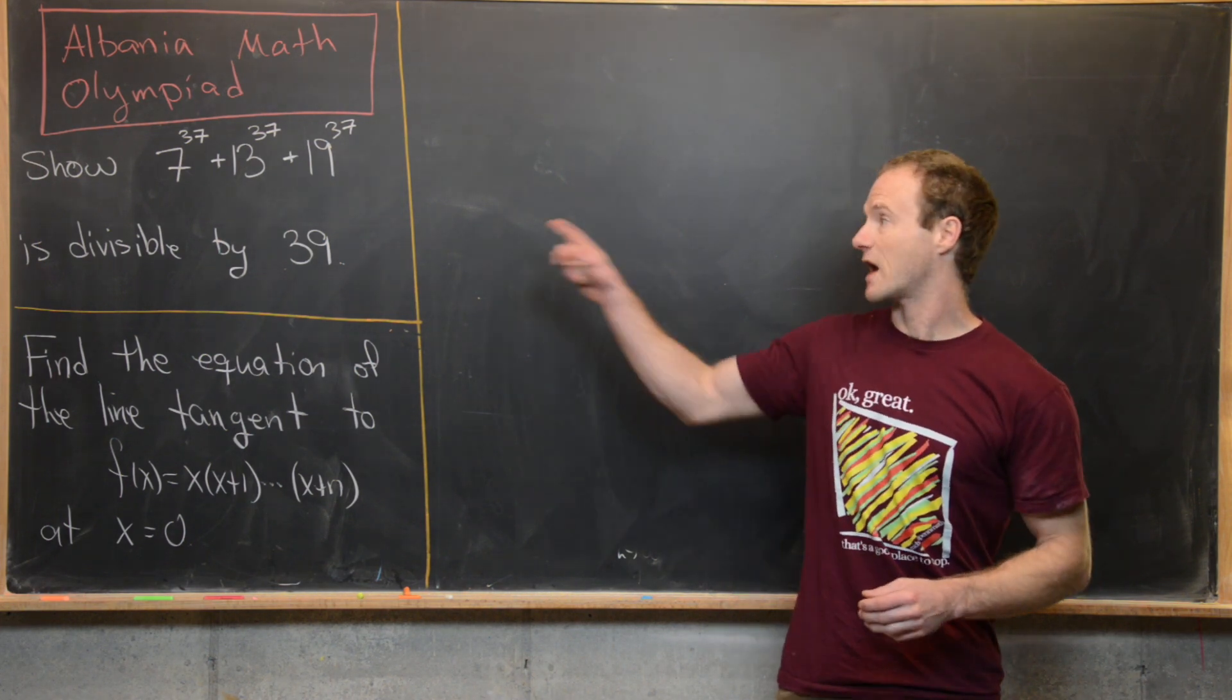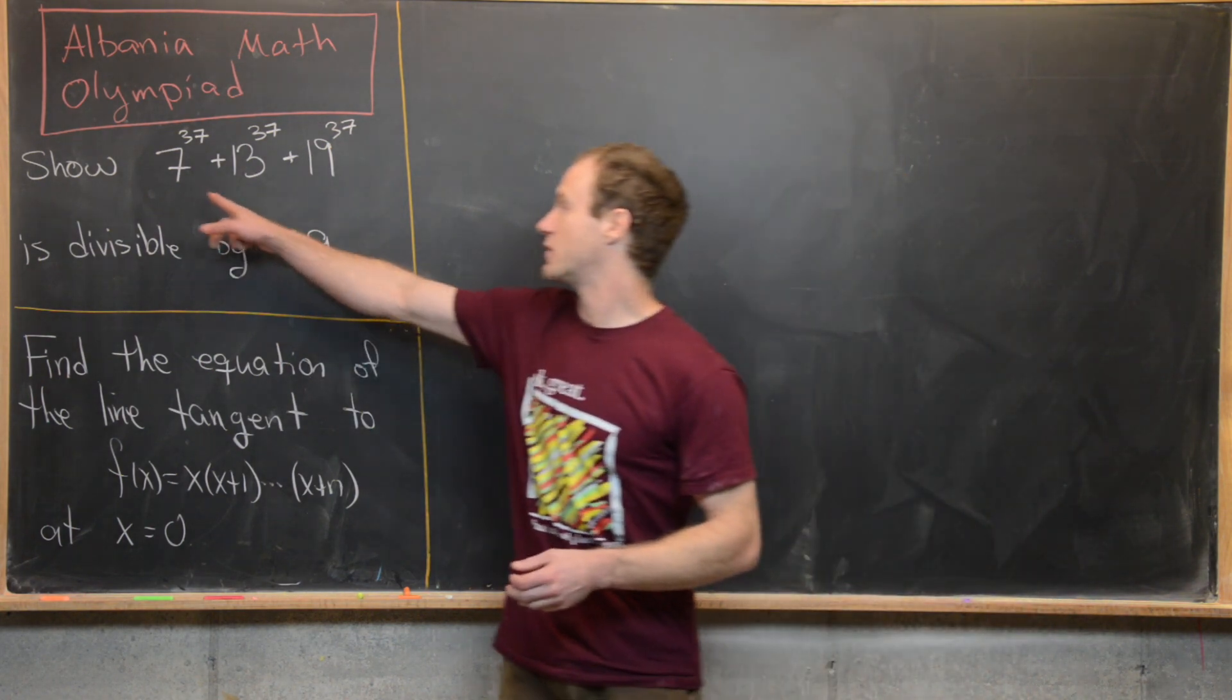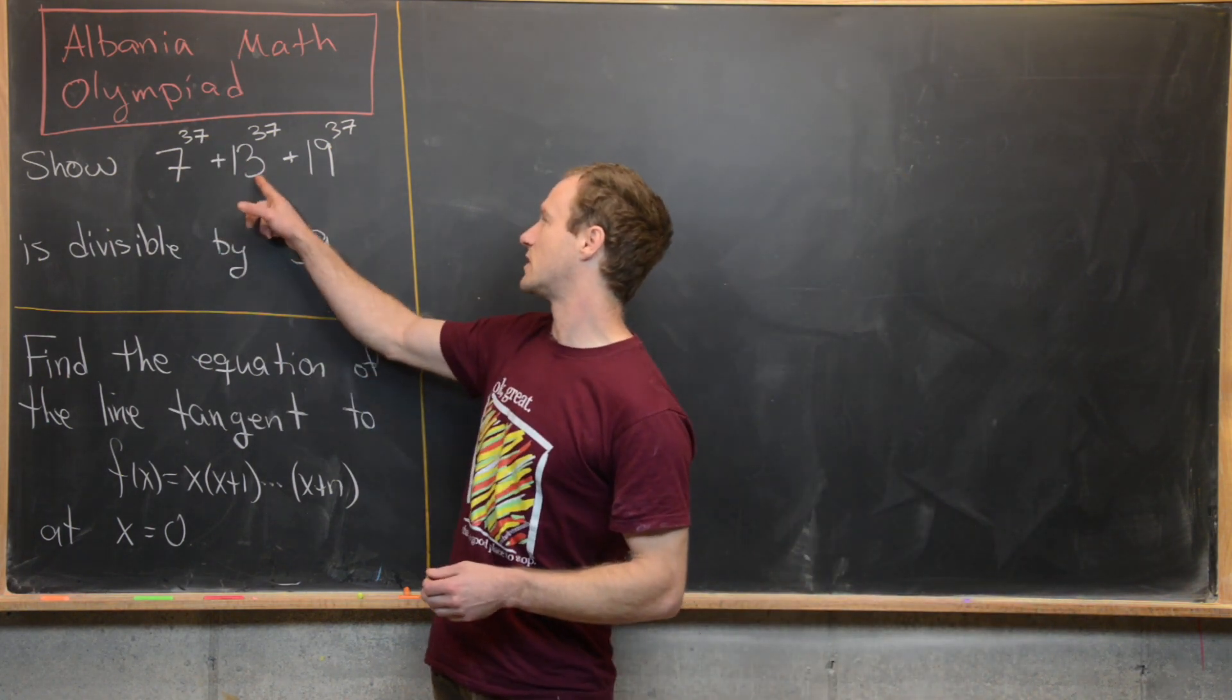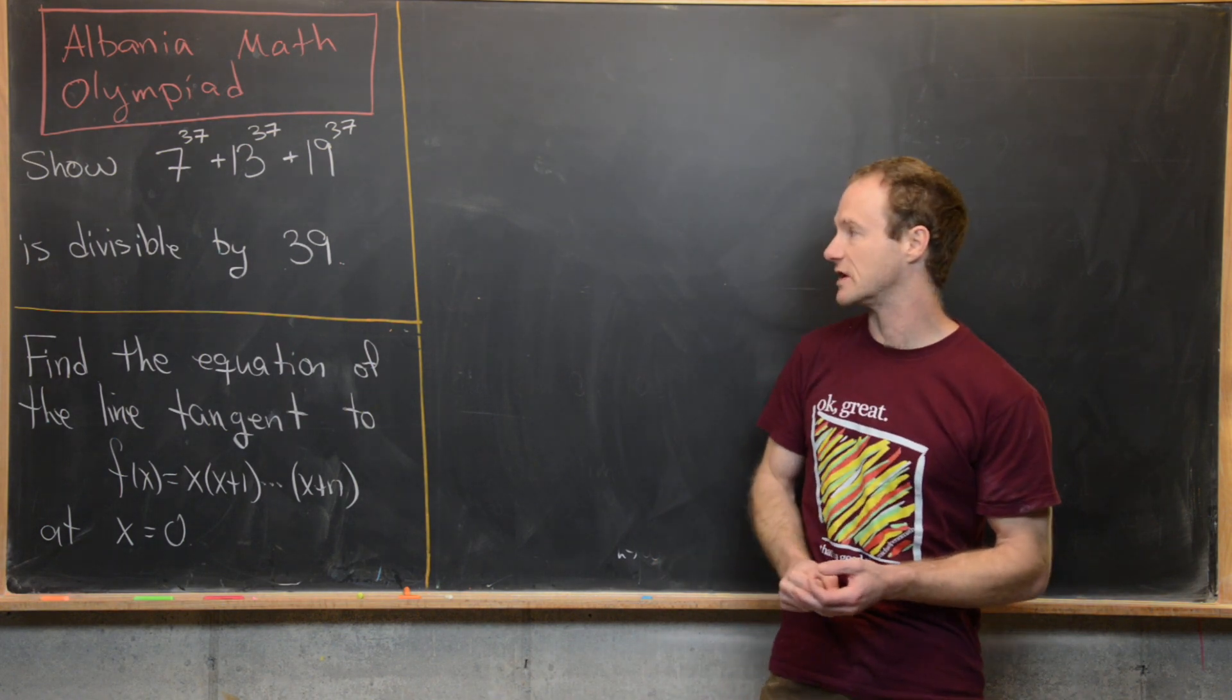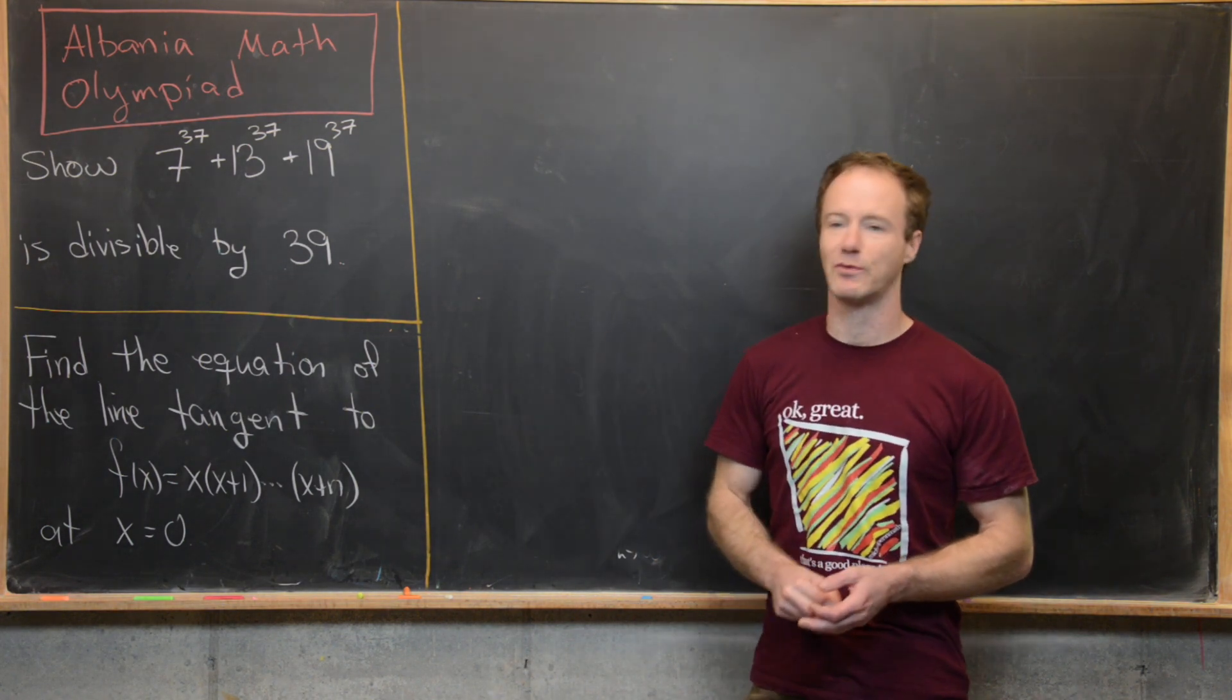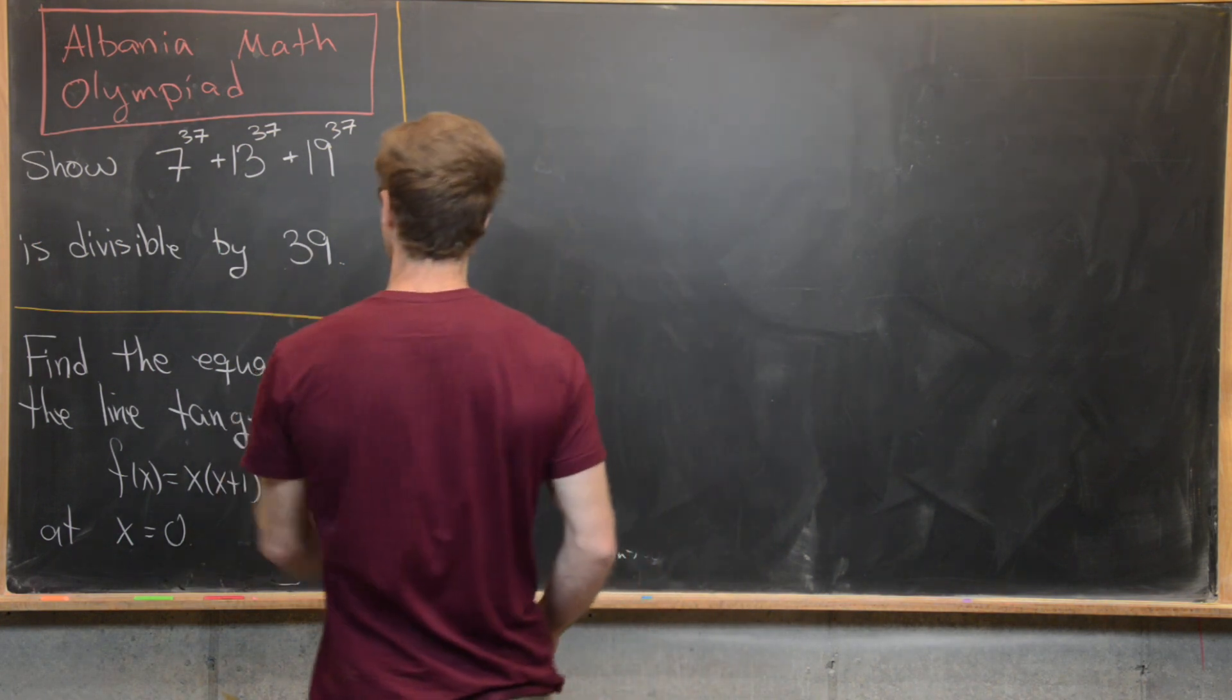Now let's jump right into the solution of the first problem. So we want to show that 7^37 + 13^37 + 19^37 is divisible by 39. So let's see how we can do that.